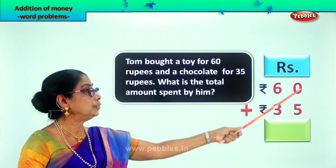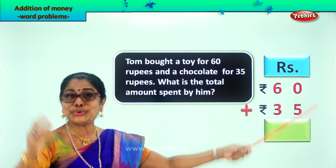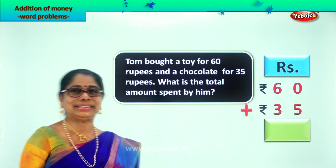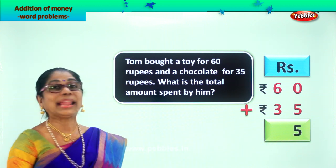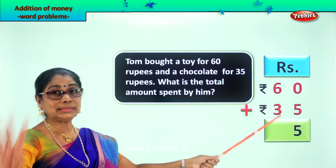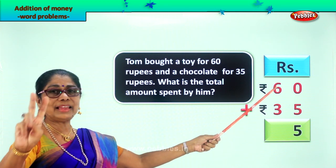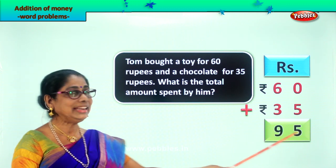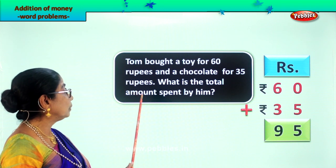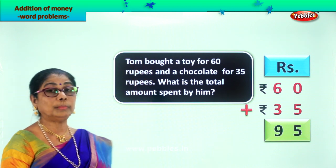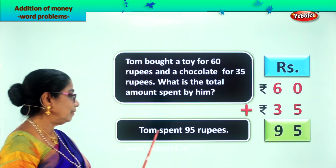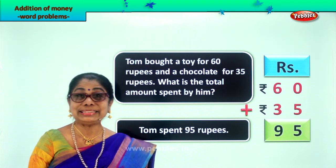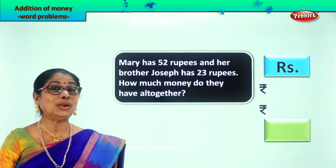Let's add. In the ones place you have 0 plus 5. What is 0 plus 5? It's 5 itself. So we write 5 in the ones place. In the tens place: 6 plus 3 is 9. So we write 9 here. We get 95 rupees. Tom spent rupees 95 for a toy and a chocolate.